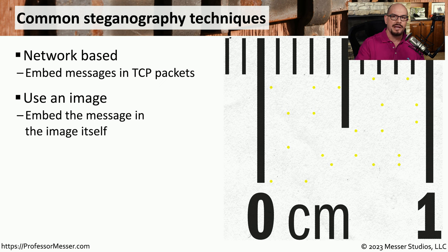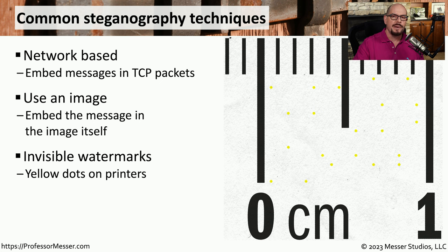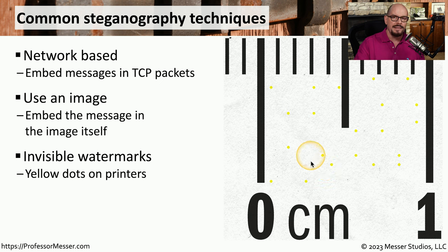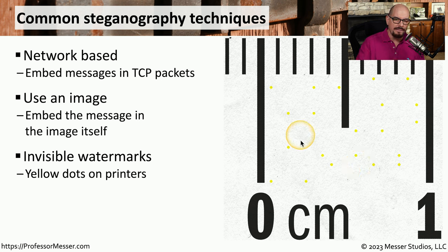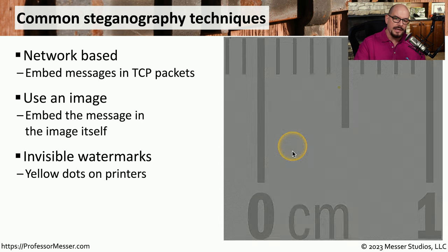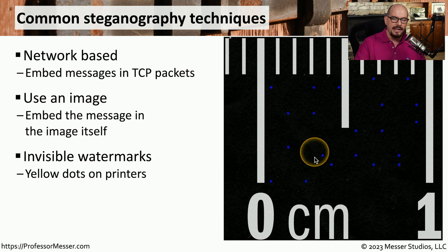Another interesting way to hide information is by putting dots on a piece of paper. These are almost invisible watermarks included with laser printers and other types of printers. If you look very closely at a printed page, you'll start to see little yellow dots appear. These yellow dots are referred to as machine identification codes, and if you know the format of these dots, you can match them back to the printer used to print the output. It's difficult to see with yellow dots on a white page, so inverting the image reveals blue dots on a black page. If you look closely at output from your laser printer, you should be able to find those yellow dots somewhere on the printed page.